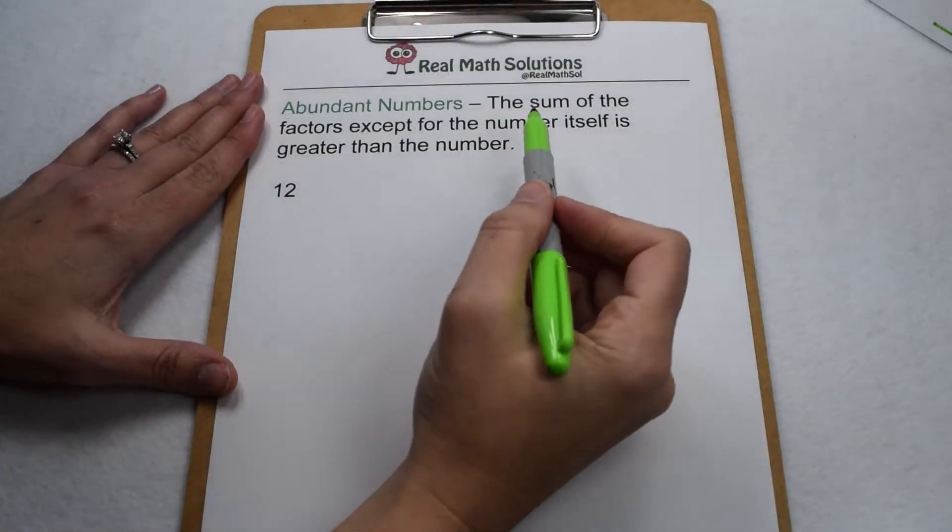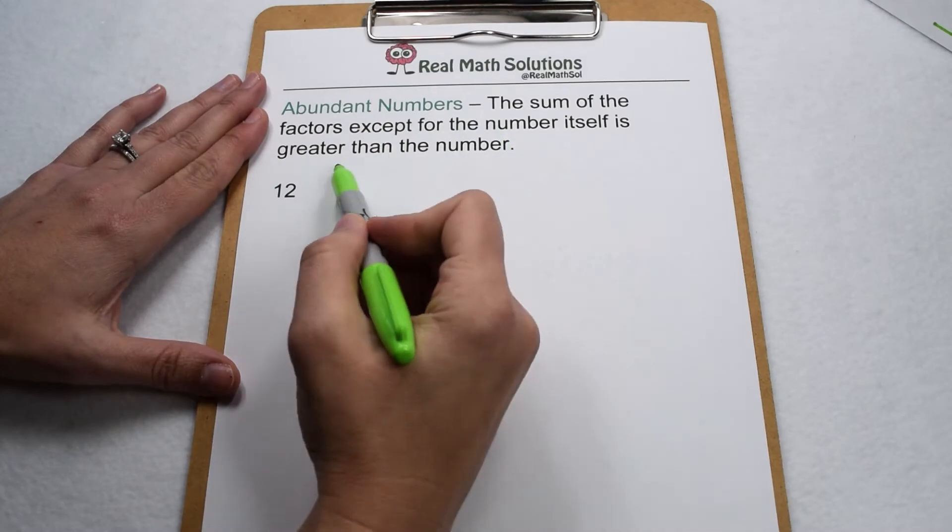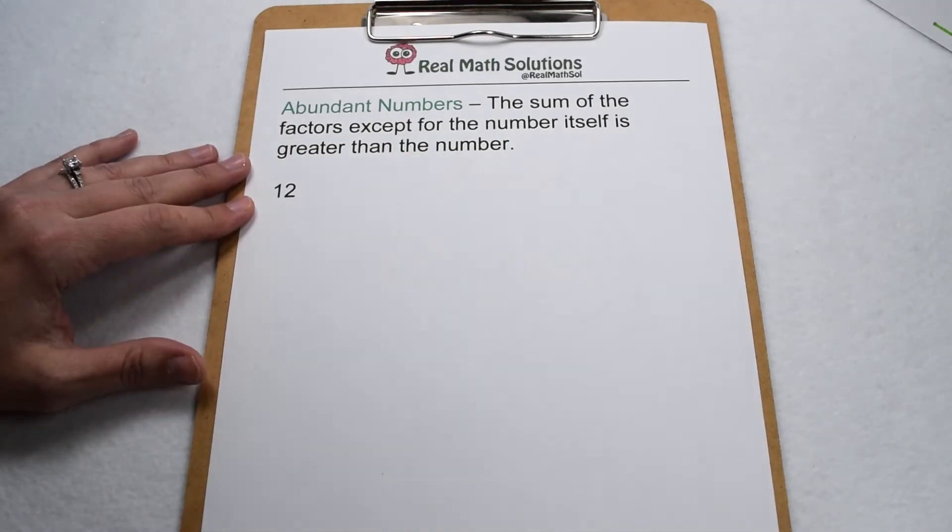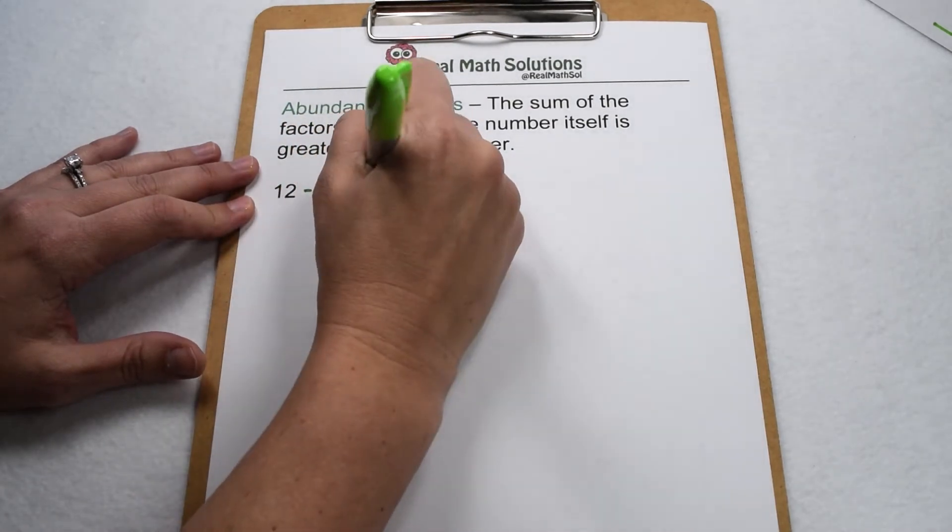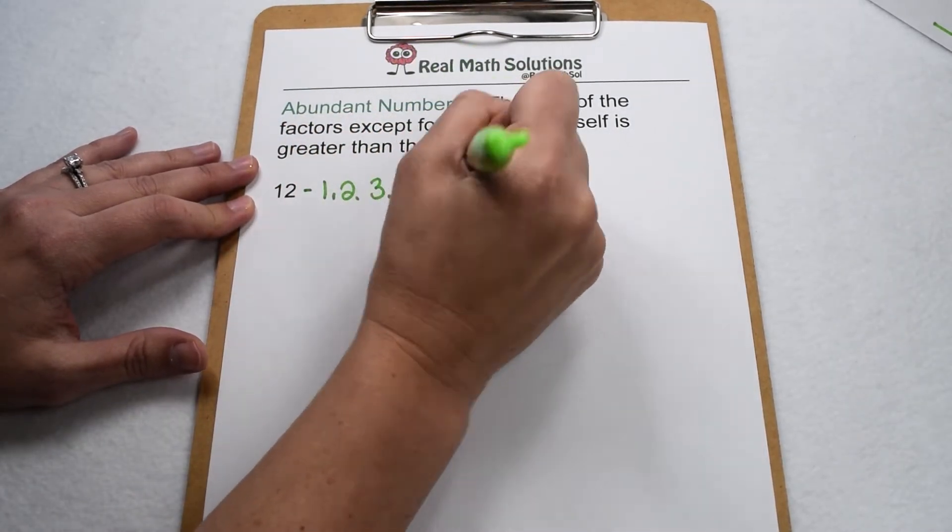An abundant number occurs when the sum of the factors except for the number itself is greater than the number. 12, for example, would be an abundant number. Factors of 12 include 1, 2, 3, 4, 6, and 12.